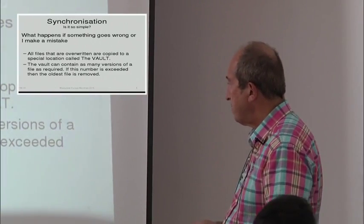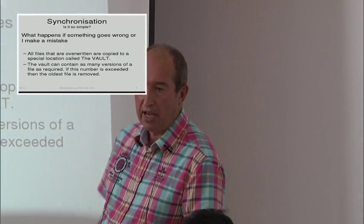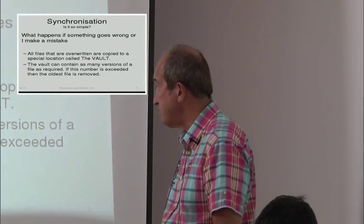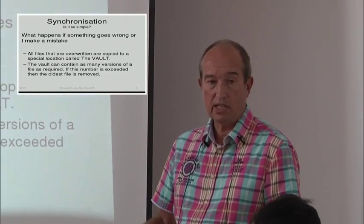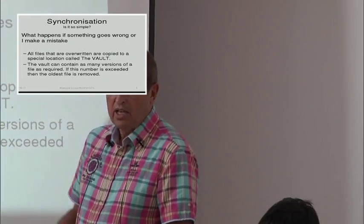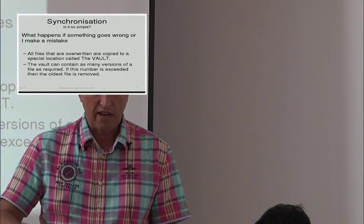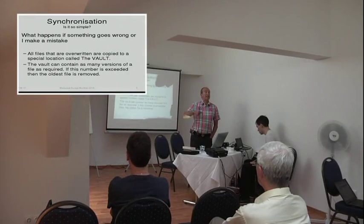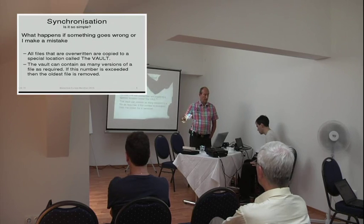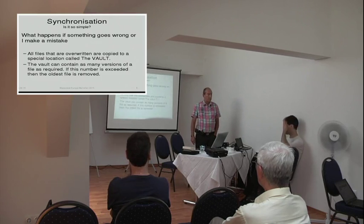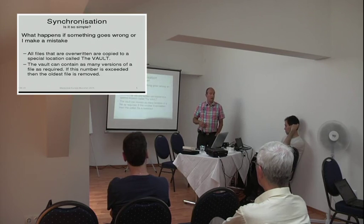With EasySync we have what we call a vault — basically a database on the drive that you're copying to. You have a vault on every particular drive or system. Every time a file is overwritten or deleted, it is put in that vault. If you do another synchronization at a later date, the same file that has been updated would also be put into the vault, but as a separate version. So you can always find back all the files that you have ever overwritten or deleted. In principle the number is unlimited, but in practice you limit it to a certain number such as 20, and after a while, if the 21st file is entered, the oldest is just removed.